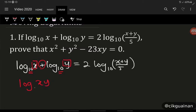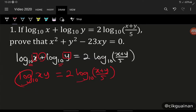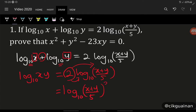So we get log(xy) base 10 equals 2 log((x+y)/5) base 10. We can see log on the left and log on the right, but we still have that 2 in front on the right side. The coefficient 2 can become the power for the argument inside the bracket, so it becomes log((x+y)/5)² base 10. Remember, the power 2 applies to the argument only, not the entire log expression.